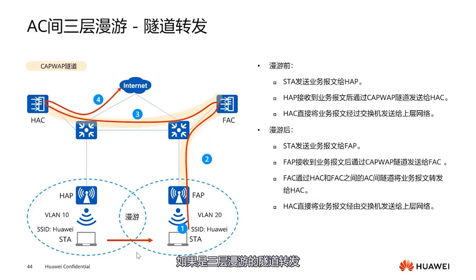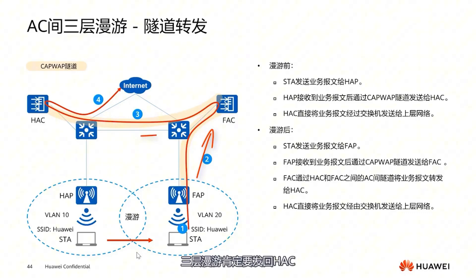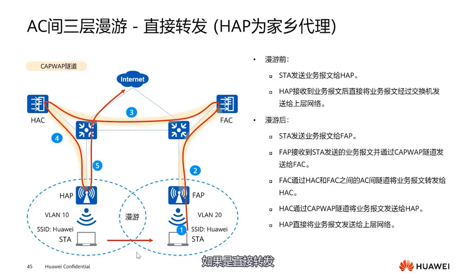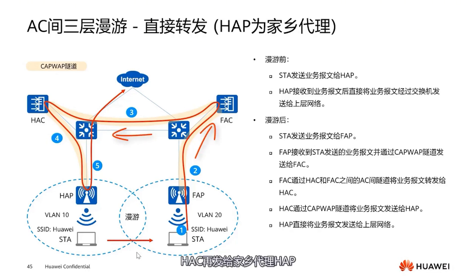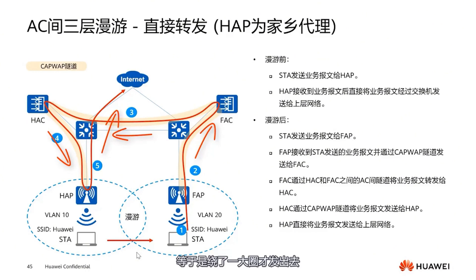For inter-AC Layer 3 roaming with tunnel forwarding: it goes from FAP to FAC, and because it's tunnel forwarding, after FAC, in Layer 3 roaming, it sends back to HAC, and then HAC sends it directly to the upper network. If it's direct forwarding, it gets more complicated. Starting with HAP as the home agent: FAP must go to FAC, FAC sends to HAC, HAC sends to the home agent HAP, and HAP then sends to the network — making a big round before sending out.